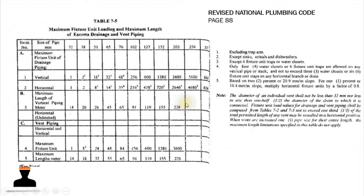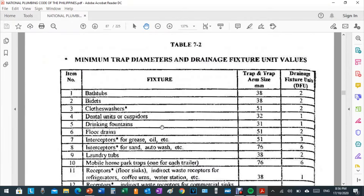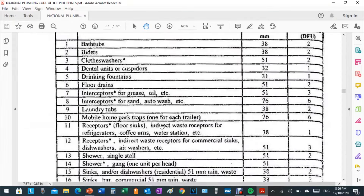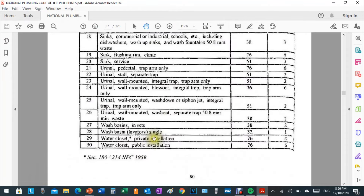Let's apply this table in actual design. Example number one: determine the diameter of the horizontal, vertical, and vent pipe that serve two private water closets, two lavatories, and two floor drains, and compute the maximum length of the vertical pipe and vent pipe. First, let's compute the total drainage fixture unit by going to Table 7-2. We have three different fixture types: water closets — private installation.